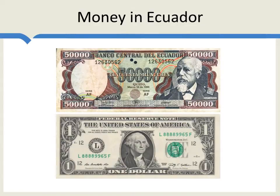Here's a picture of some Ecuadorian money. Prior to the year 2000, the Ecuadorians used the sucre. After the year 2000, they used the dollar. This was a controversial switch in Ecuador — why should Ecuadorians have a picture of George Washington on their currency instead of a picture of Eloy Alfaro, a famous Ecuadorian president? Can you guess why they switched? It has something to do with the fact that this is a 50,000 sucre note.